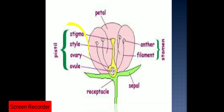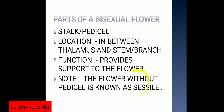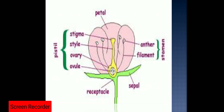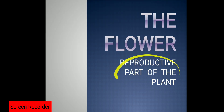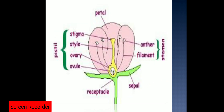On the basis of reproduction, the gynoecium and the androecium are the essential whorls of the flower, whereas the calyx and corolla are the non-essential whorls, which help in the process of reproduction. The basic function of the flower is to take part in the process of reproduction, so the whorls are divided into two categories: essential whorls and non-essential whorls.